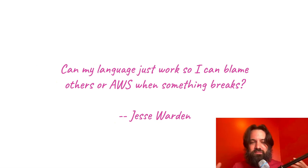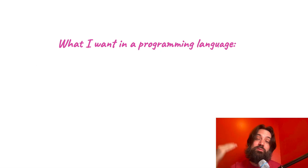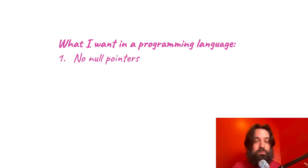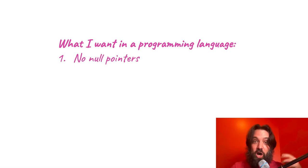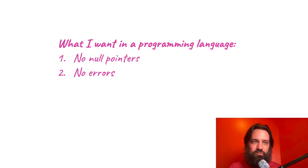Jesse Warden's quote around this is: I want my language to just work so I can blame others or AWS when something breaks. What I want from a programming language: no null pointers. I don't like null pointers. I found out this problem has been solved — I had no idea it was solved — and I'm definitely on board. I would love to never have to deal with null pointers ever again. I don't want any errors.